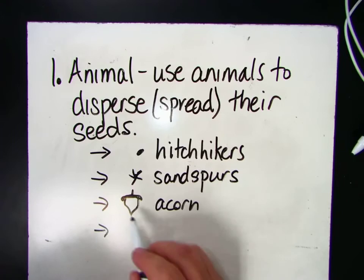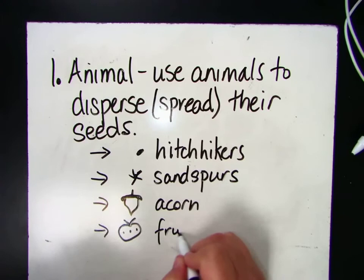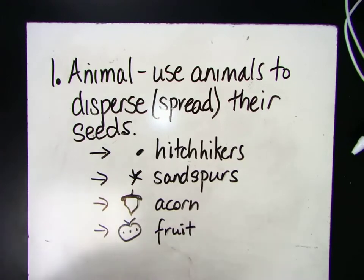Another way is with fruit. Plants make beautiful, enticing fruit, and animals eat the fruit, and the seeds eventually end up somewhere else. So that's a great way to disperse seeds using animals. There's a number of ways that plants use animals to disperse their seeds.